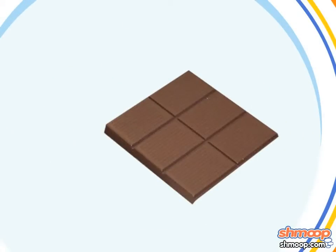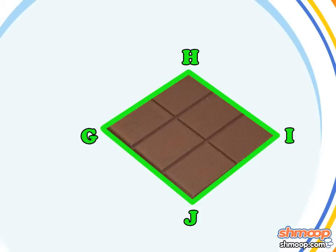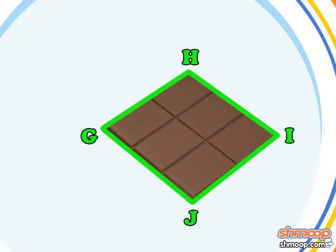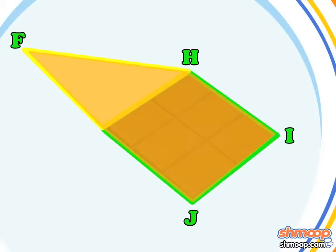Here is Tom's chocolate lunch. GHIJ is a square piece of chocolate. He's only allowed to have a serving of chocolate with an area of less than 55 square millimeters. So let's find the area of figure FHIJ.